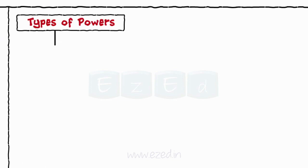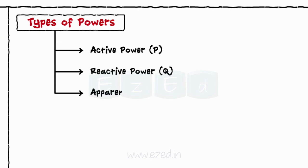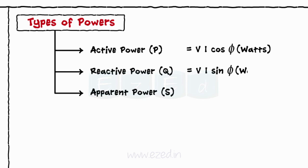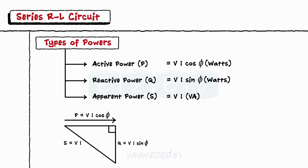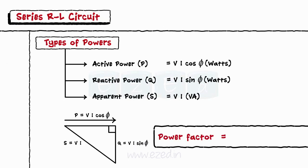For AC circuits, we calculate three types of powers: active power, reactive power, and apparent power. Active power equals VI cos phi, reactive power equals VI sin phi, and apparent power equals V into I. The power triangle is drawn as shown, and the power factor is cos phi equal to P upon S.